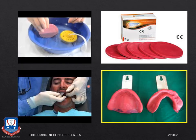Another material for primary impressions is impression compound — a thermoplastic material available in cakes. These are tempered in a hot water bath, kneaded into a ball, placed in non-perforated edentulous stock impression trays, and the impression is recorded. You must work quickly as it starts hardening soon after removal from the hot water.